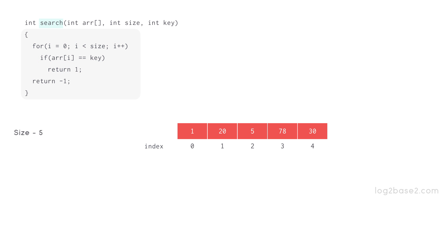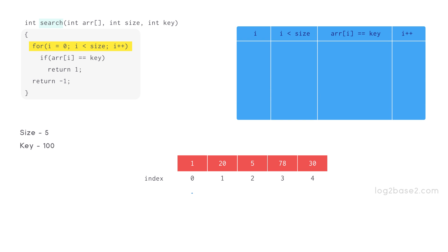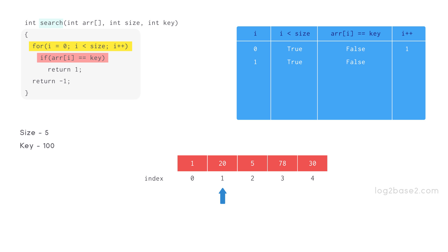Now let us see the second case if the key is not present in the array. The array is the same with size 5 but the search key is 100. So first we have i equal to 0 and 0 is less than 5 so the condition is true. So compare 1 and 100 — the comparison returns false. Now i is incremented and it becomes 1. Now 1 is less than 5 so condition is true.